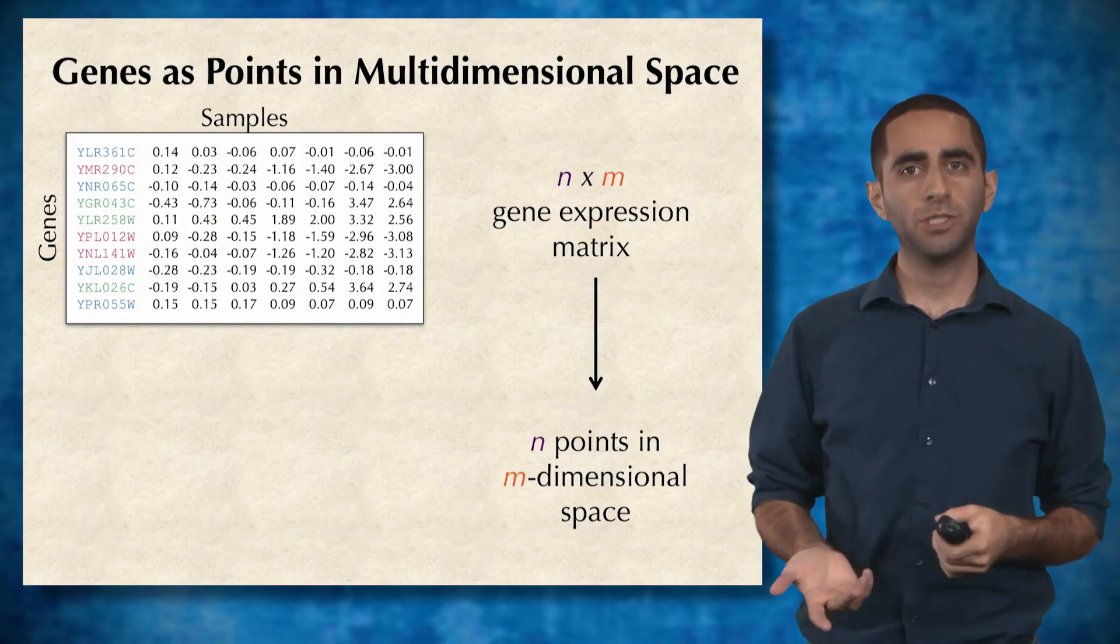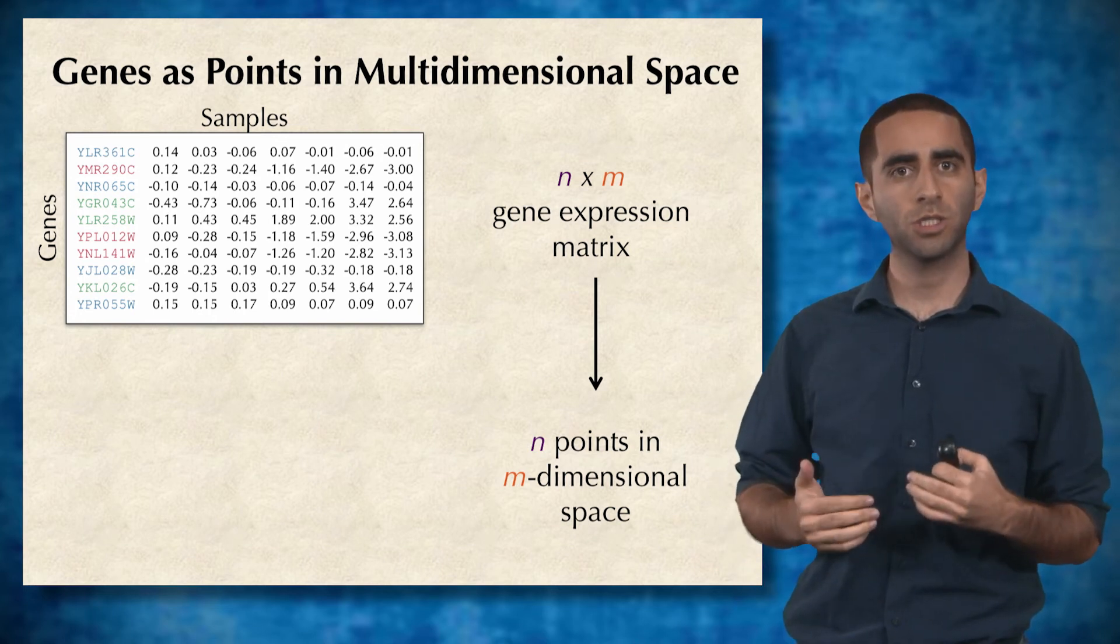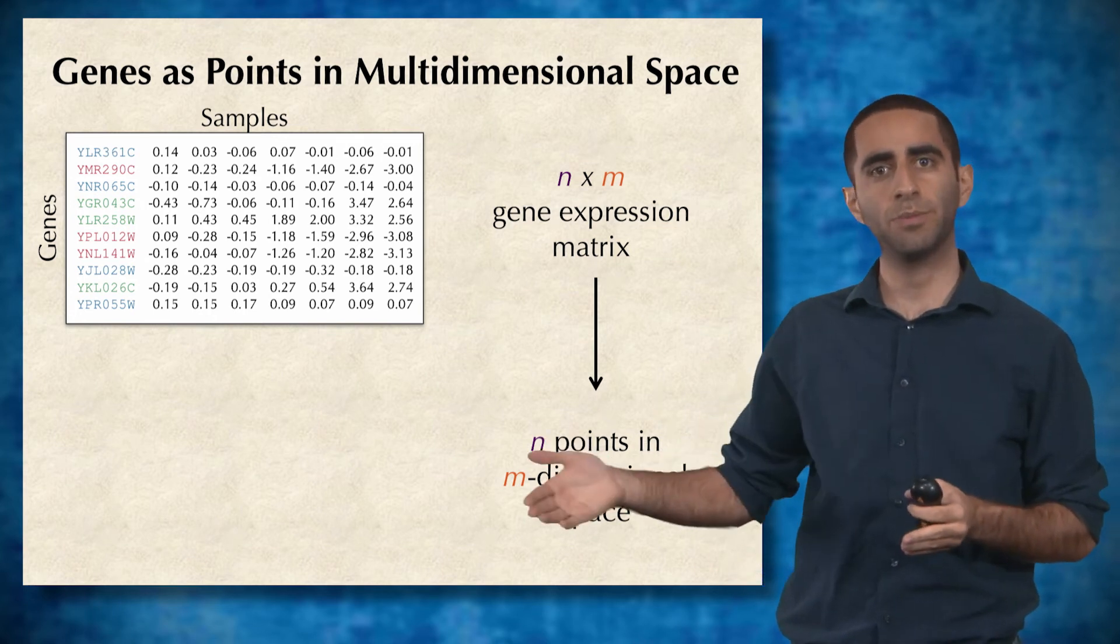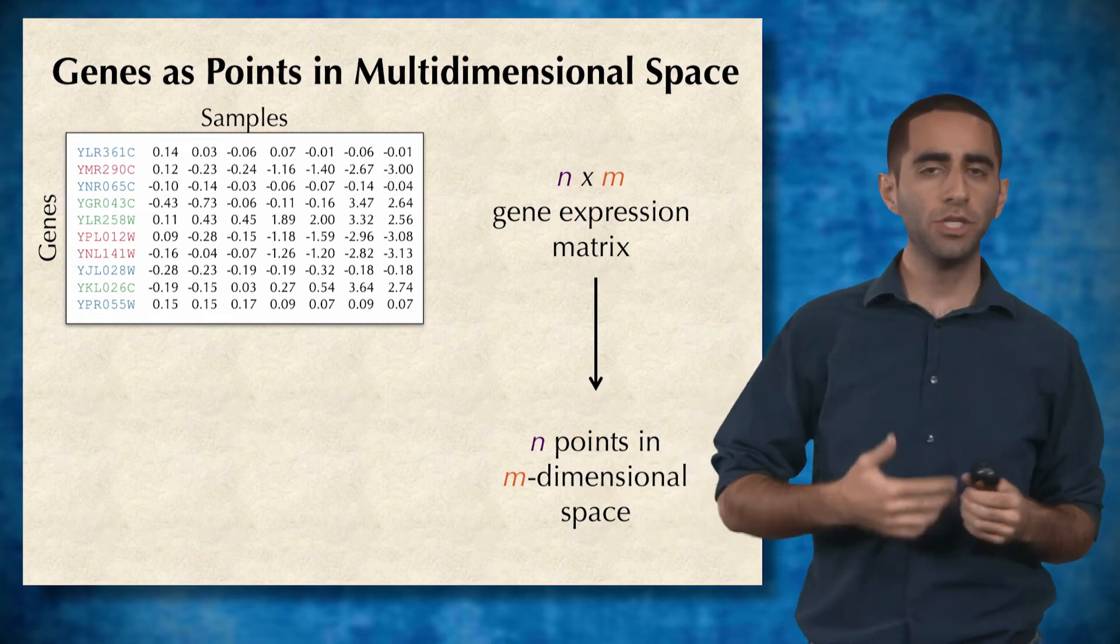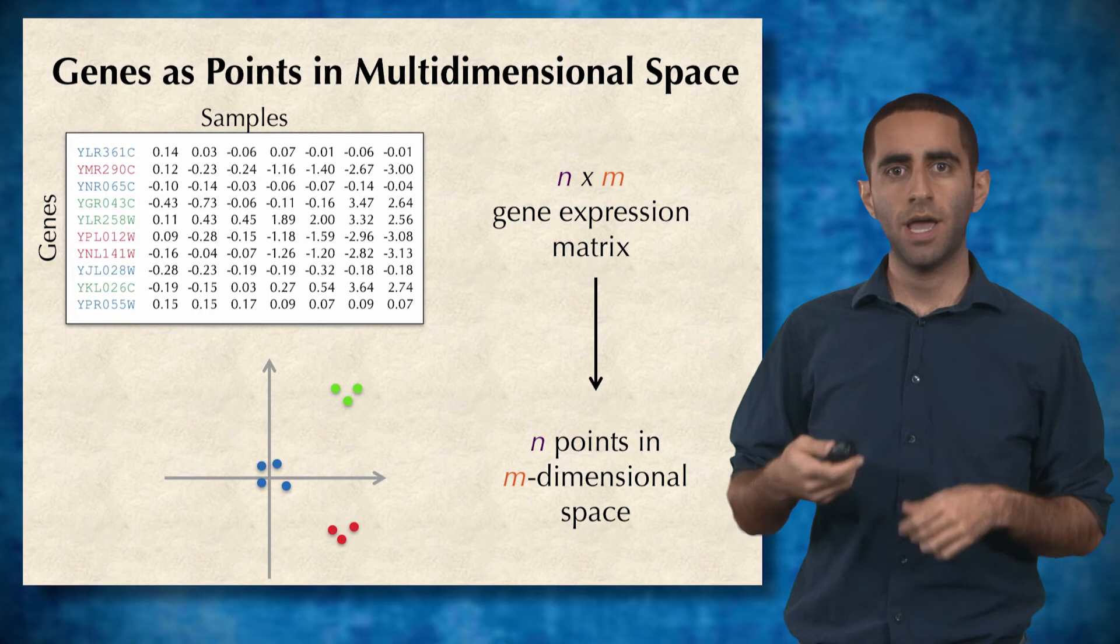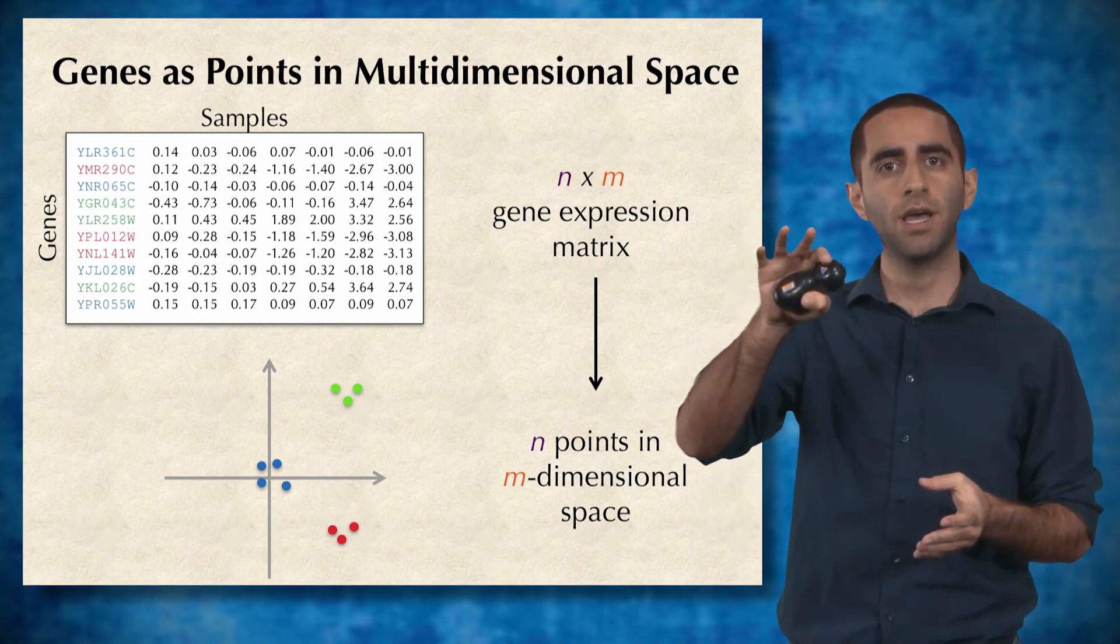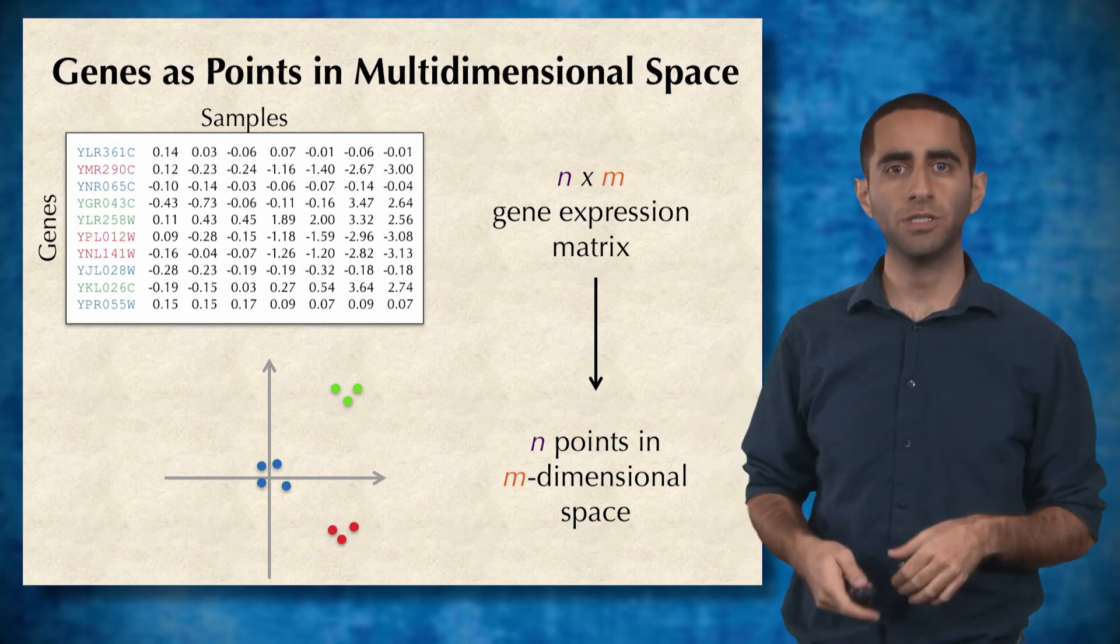Another way to think about the gene expression matrix is that you have an n by m matrix where each of the n rows corresponds to a single point, and you have m columns representing m dimensions. So each gene is one point in m-dimensional space. In this way, we should be trying to find out how these genes cluster in this m-dimensional space.